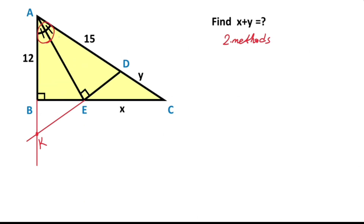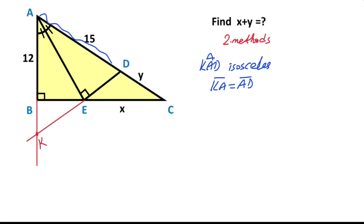This triangle has both an angle bisector and a height, that means triangle KAD is an isosceles triangle. Therefore the length of KA must be equal to the length of AD. So if AD is 15 units, that means this length must also be equal 15 units, so three units are left here.